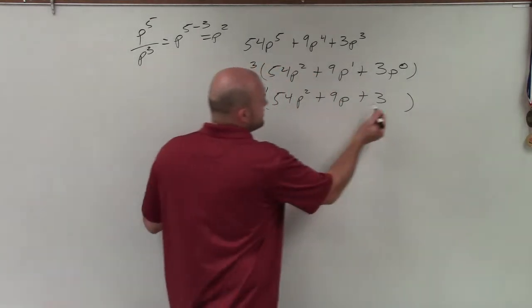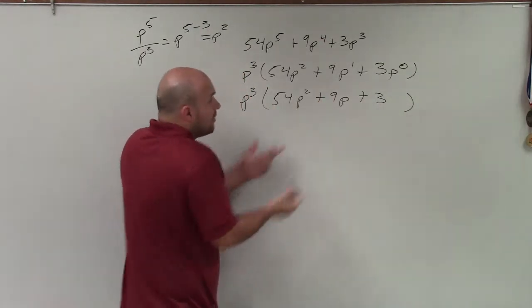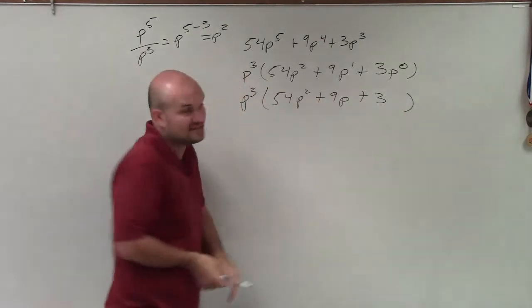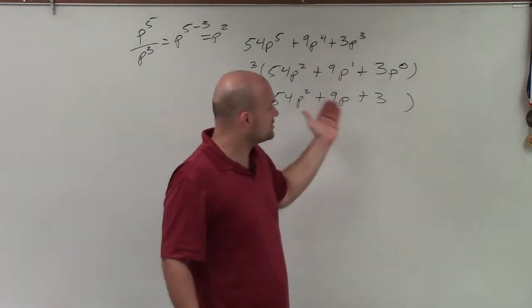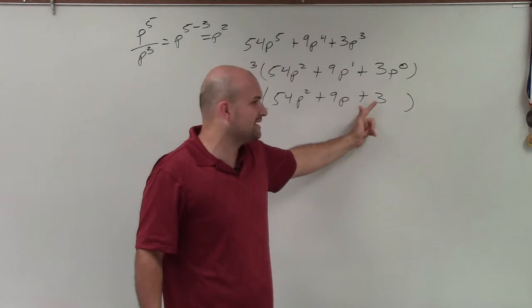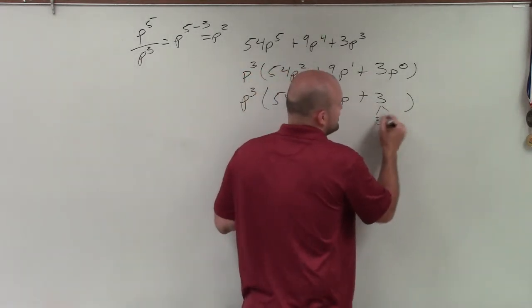Now the next thing we want to do is, all right, is there a common denominator or a common factor for 3, 9, and 54? Well, we know that 3 divides into 54, right? And so therefore, we know that the largest common factor between 9 and 3 would be 3, right? So the only factors of 3 is 3 and 1.